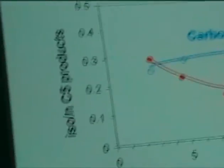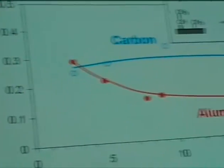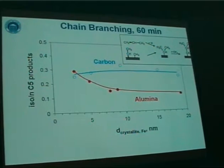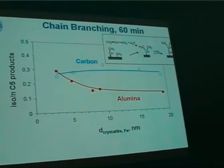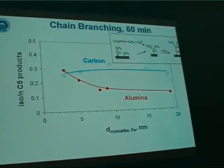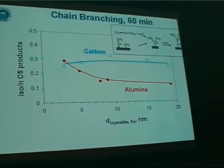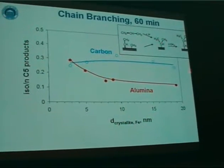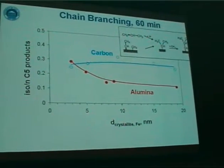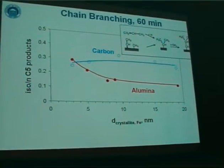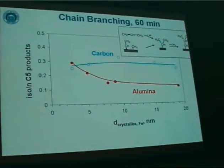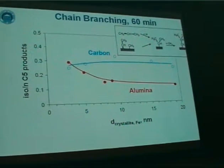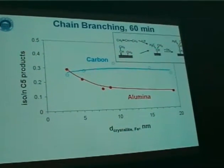Another reaction we investigated was chain branching. Potassium is known to suppress chain branching — giving less branched products with potassium promotion — and we seem to see this in the alumina series. In the carbon series, where we think there is no hampering effect, this shows us the true effect of crystallite size. We find almost no trend of the iso-to-normal ratio in the C5 fraction.